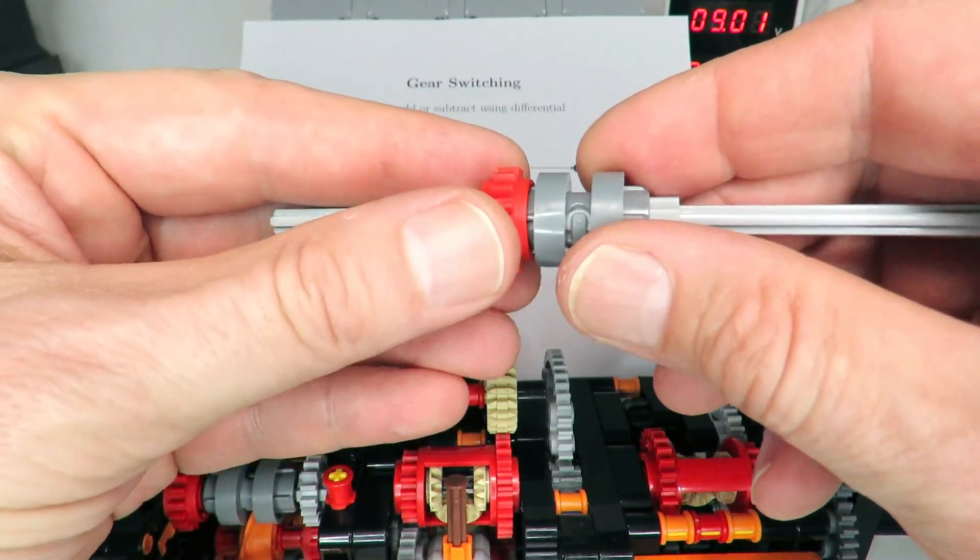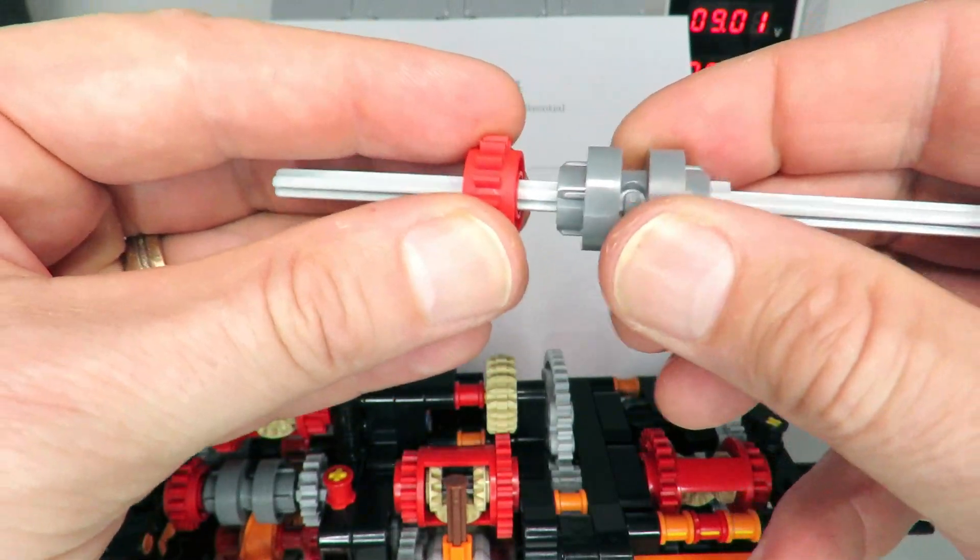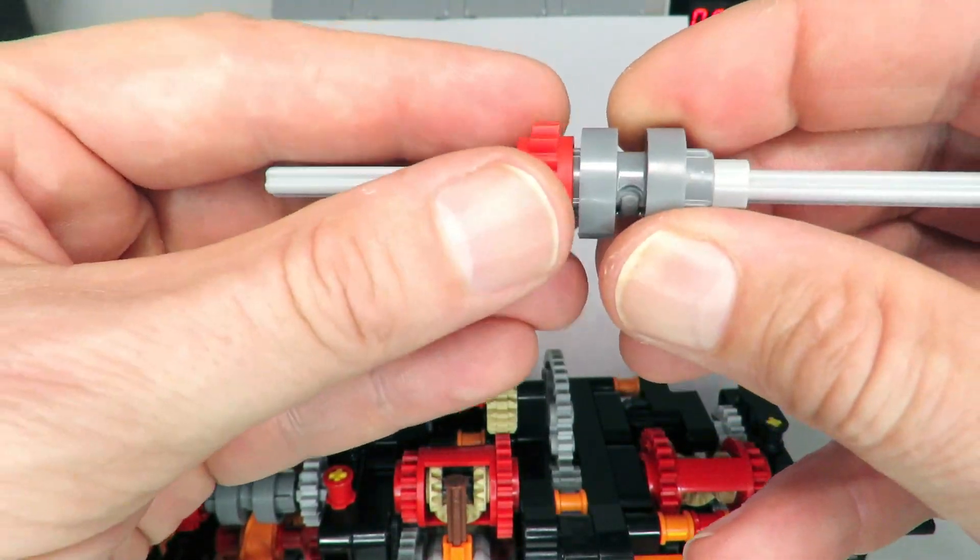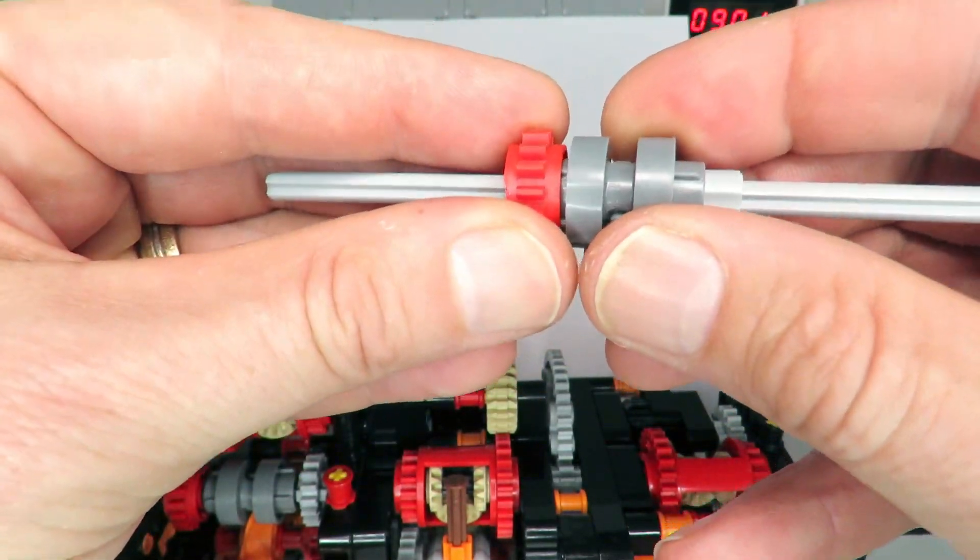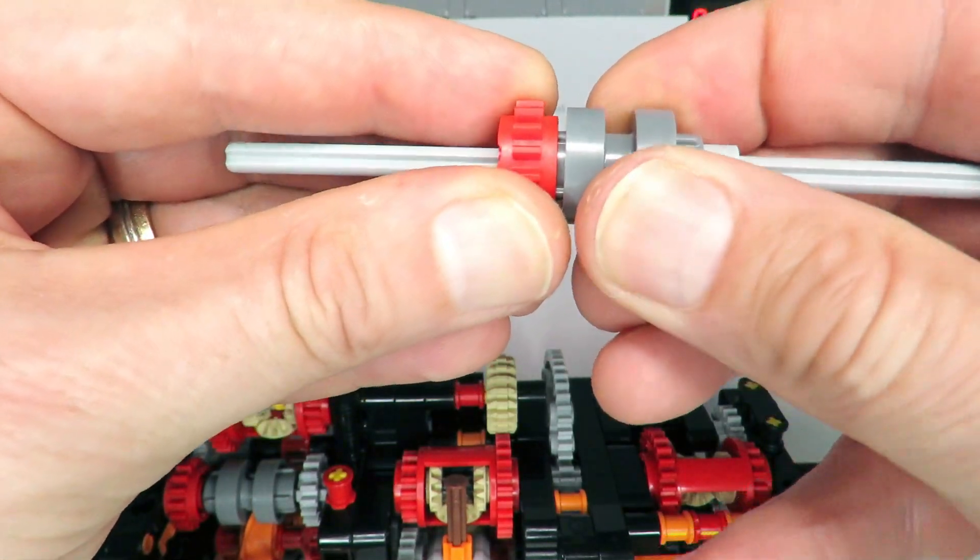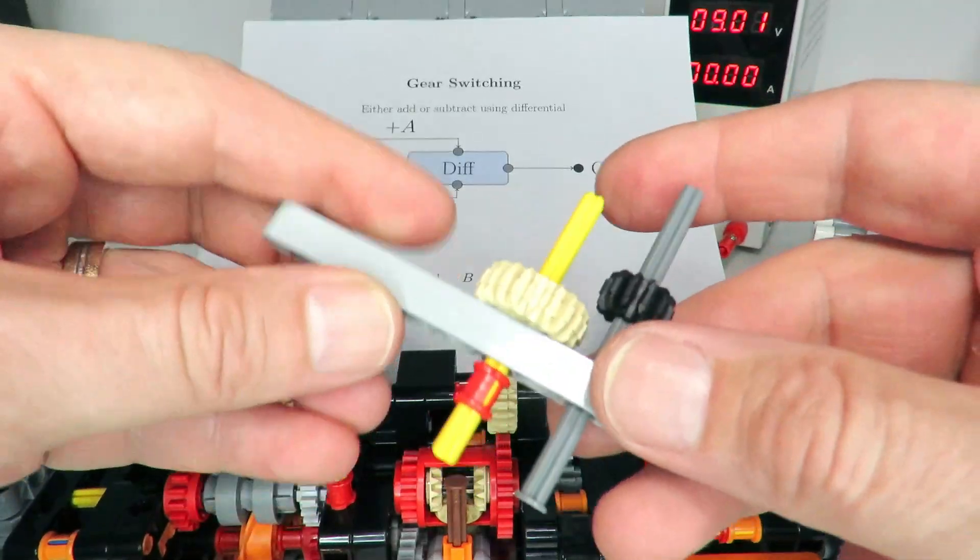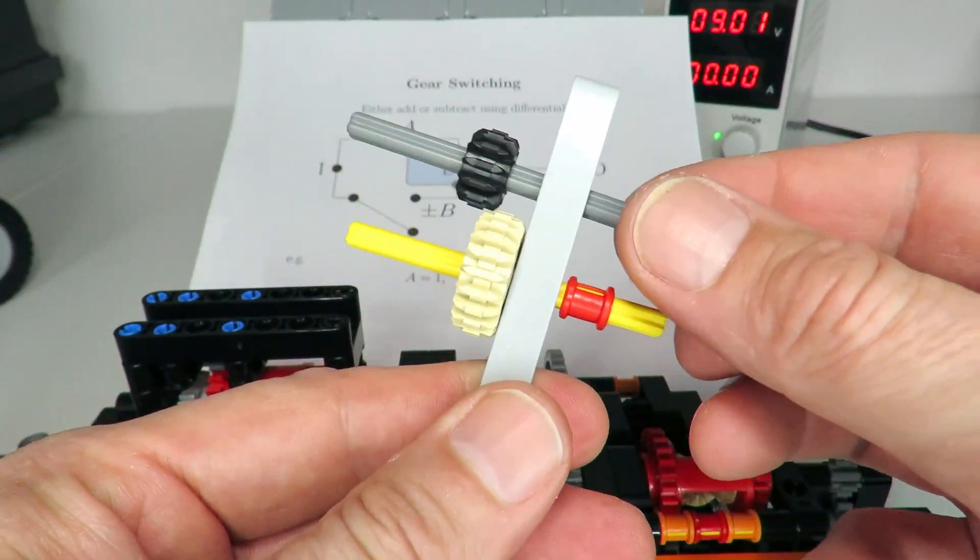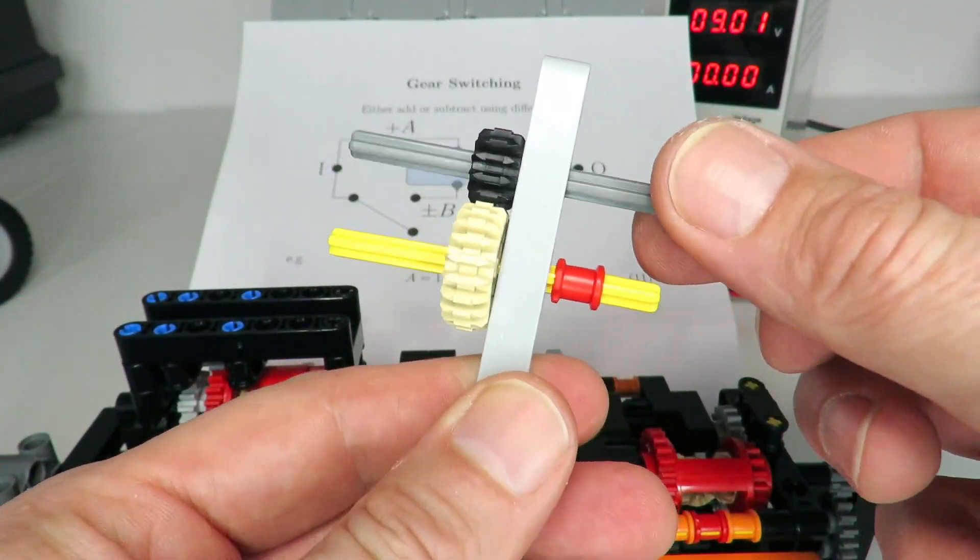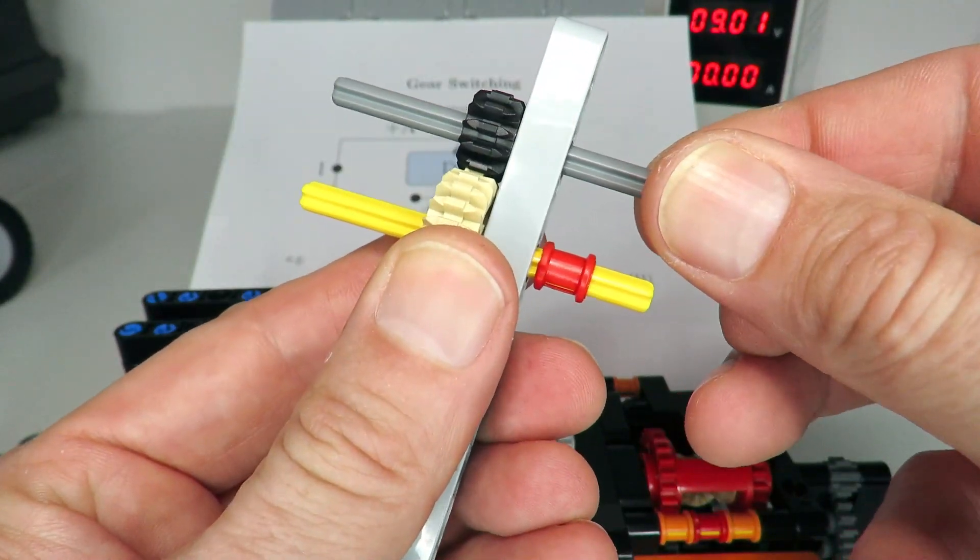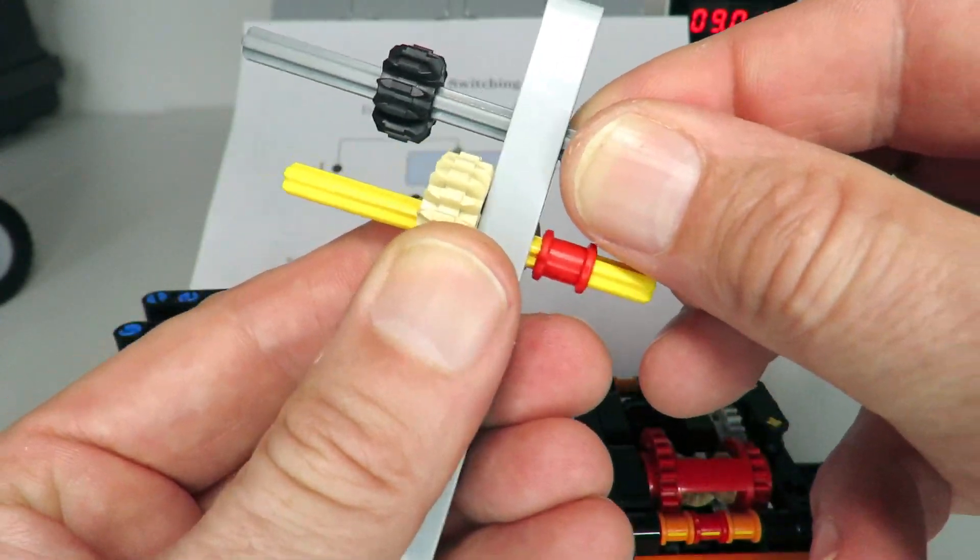Now the problem with disengaging a gear is that it can be quite difficult just using the standard LEGO Technic switch that's been provided. Once there's a bit of torque on that red gear it's actually quite hard to disengage. So in the car, the disengaging mechanism I've used is just simply two bevel gears that move in and out like that, and when there is some torque on those two gears it can still be relatively easy to start, unlike the switch.